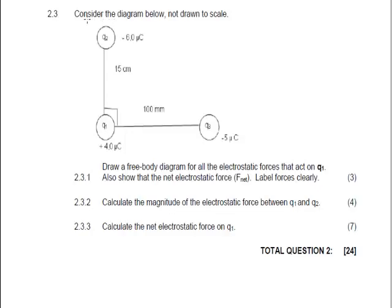Question 2.3: Consider the diagram below, not drawn to scale. We have Q2 = −6 × 10⁻⁶ C, Q1 = +4 × 10⁻⁶ C, and Q3 = −5 × 10⁻⁶ C. It says draw a free body diagram for all electrostatic forces acting on Q1.